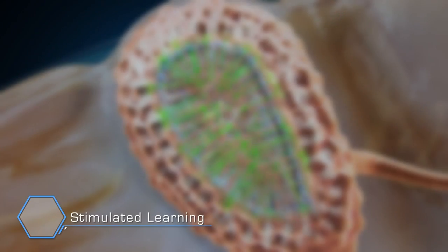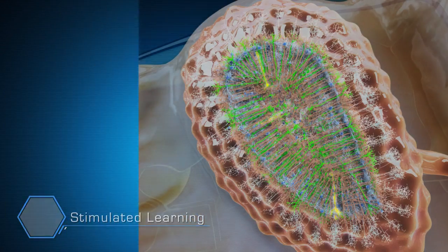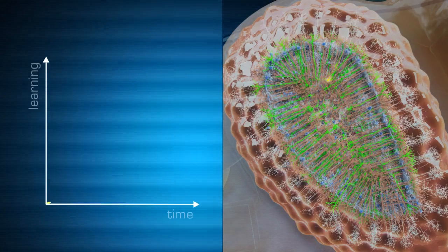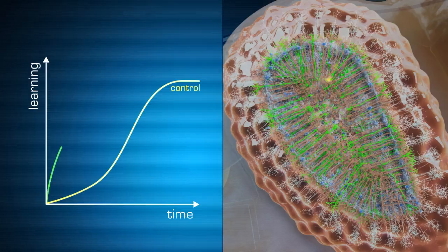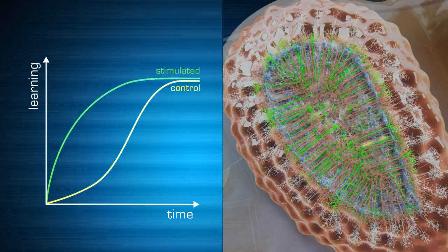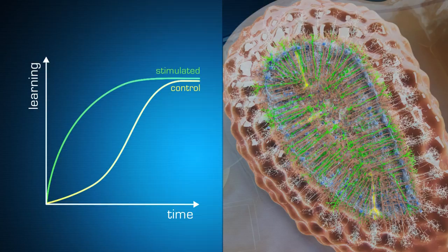In our experiments, the ability of mice to distinguish between two odours is measured. Mice with adult-born neurons labelled with a light-activating protein learned faster when light-stimulated compared to the control group. These results showed for the first time a true gain of function for adult neurogenesis.